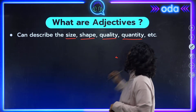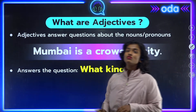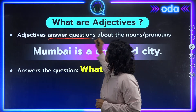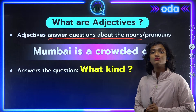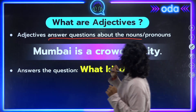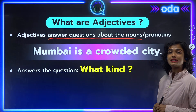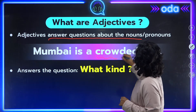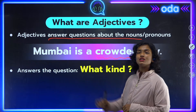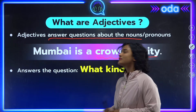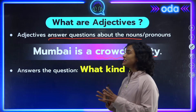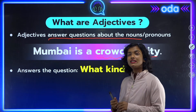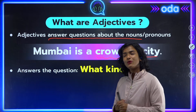You might ask how to identify adjectives. Adjectives usually answer questions about the nouns or pronouns. For example, 'Mumbai is a crowded city' — our noun is 'city,' and 'crowded' tells us what kind of city Mumbai is. So 'what kind' is one possible question that adjectives can answer. In our earlier example, 'red' and 'beautiful' both tell us what kind of dress was bought.